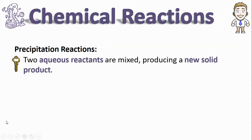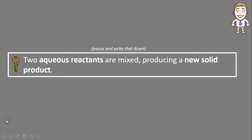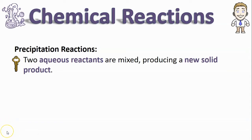With these reactions you'll have two aqueous reactants—aqueous means that they're dissolved in water—and when you mix those two solutions together you'll get a new product and that new product will be a solid. That's how you can identify precipitation reactions.